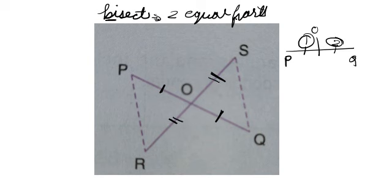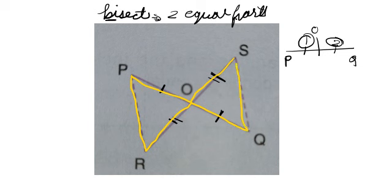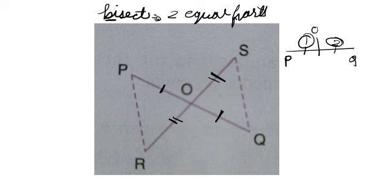We need to prove that these dotted lines are equal and how they are equal. In such cases, we need to prove the congruency of triangles. Through this figure, you can clearly see there is a triangle formed from P, R, O — and another triangle from S, Q, O. There are two triangles being formed and we will prove the congruency of these two triangles.